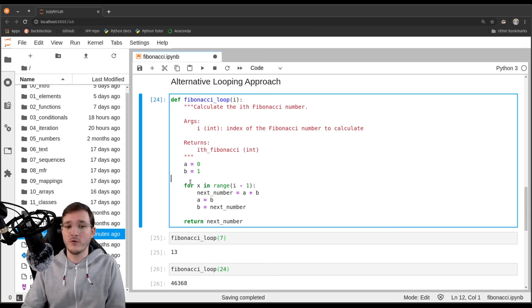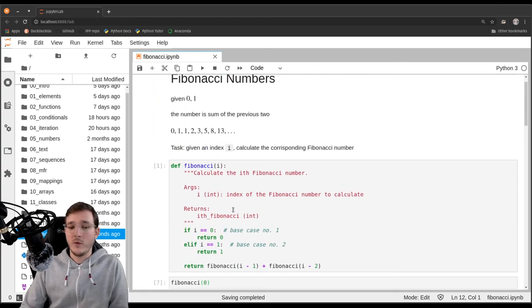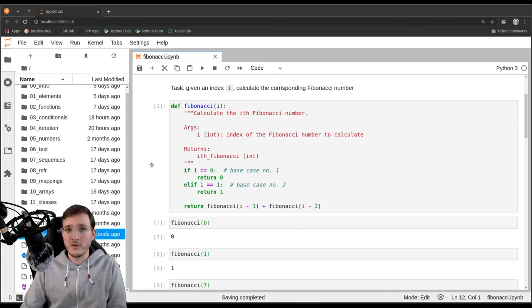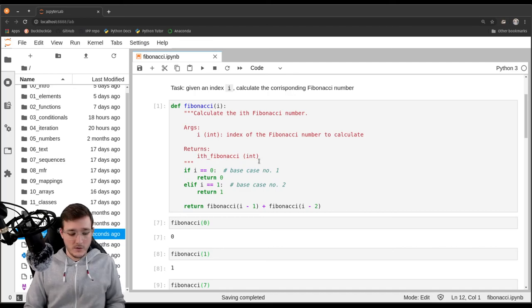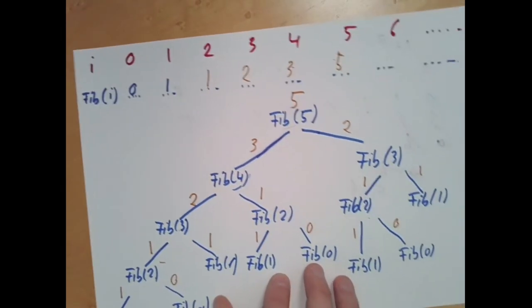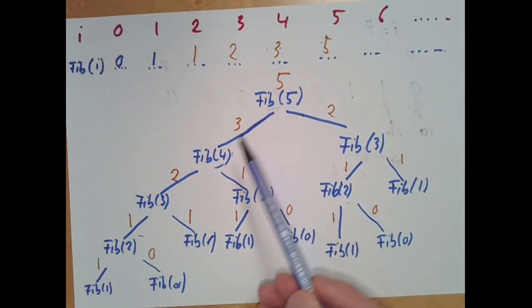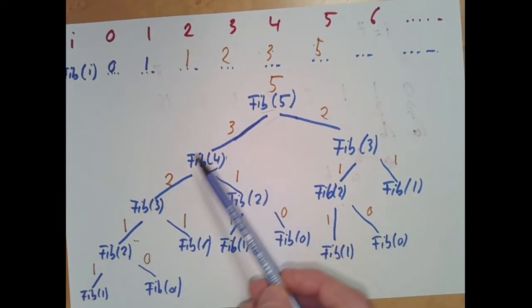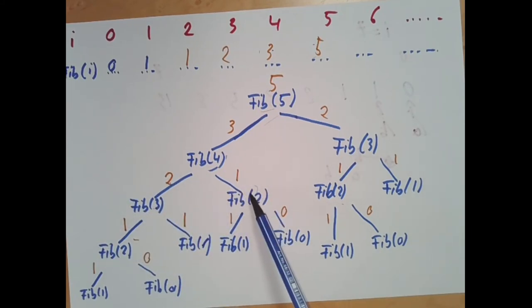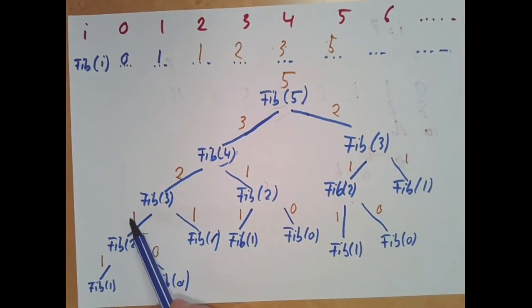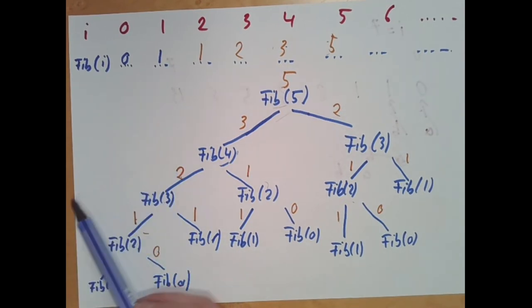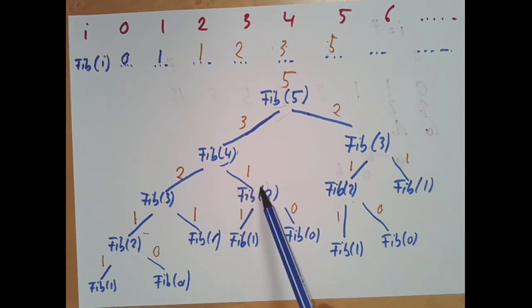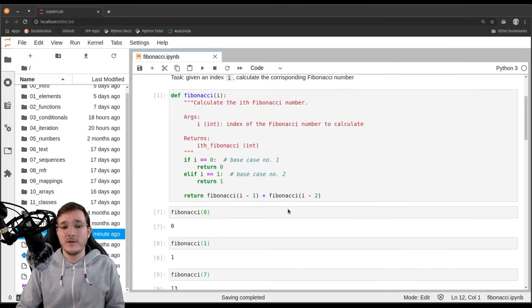However, why do I still appreciate the recursive Fibonacci formulation? It is a lot more readable. Without knowing what Fibonacci numbers are, you can guess from the code: Fibonacci of i is the sum of its two predecessors, i-1 plus i-2, with two base cases. The looping version is trickier — you must think carefully about how many times to loop and how A and B work. But the looping version is exponentially faster, making it the only practical approach. In a future chapter on dictionaries, we will revisit the recursive version and make it fast using memoization.